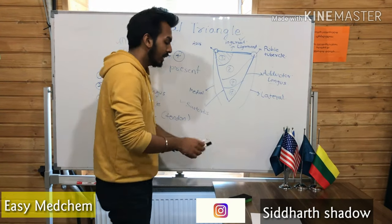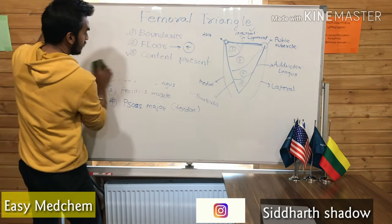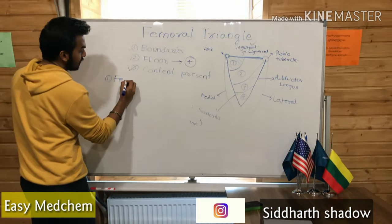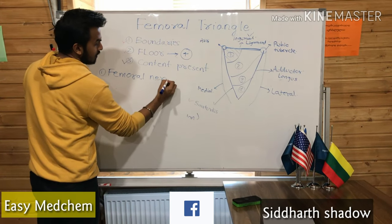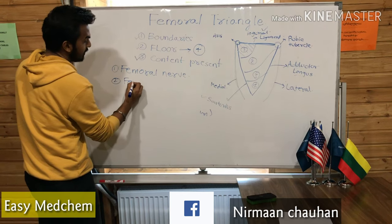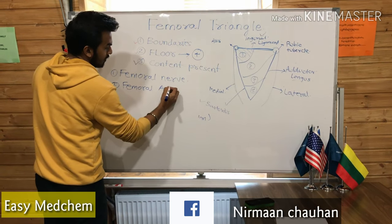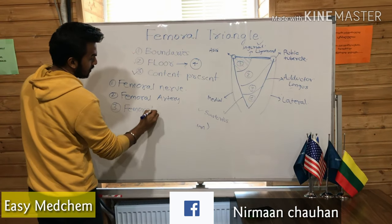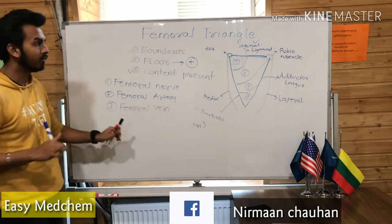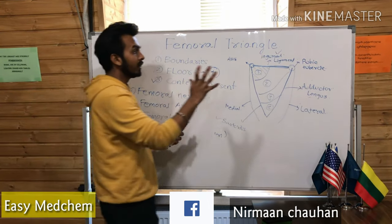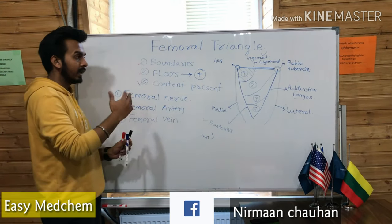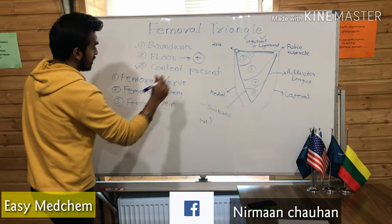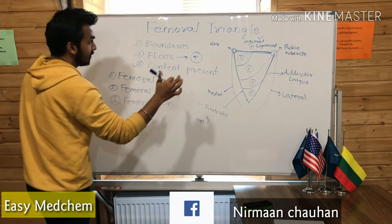The contents which are present in the femoral triangle are: first, the femoral nerve; next, the femoral artery; third, the femoral vein. What we have to remember is that the femoral triangle is a landmark from where the great saphenous vein arises from the femoral vein. The great saphenous vein arises from the femoral vein at the level of the femoral triangle.